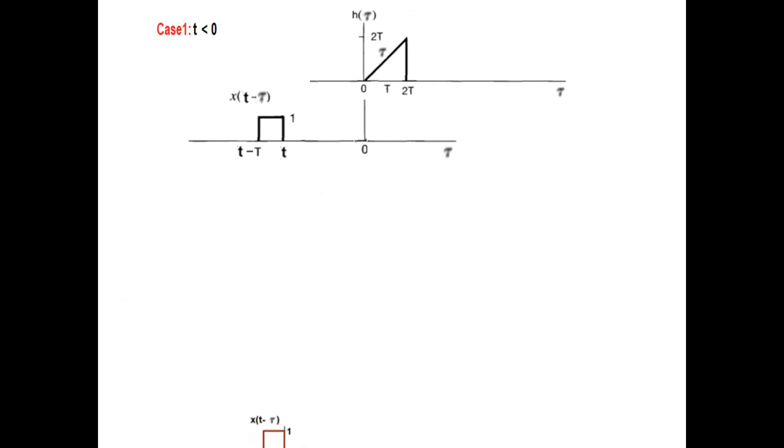And as we did in the first example, if you assume it to be mounted on a trolley, it will be much easier for you to comprehend. So this is T and this is T minus capital T. And now we will pull the trolley gradually till such time it starts overlapping.